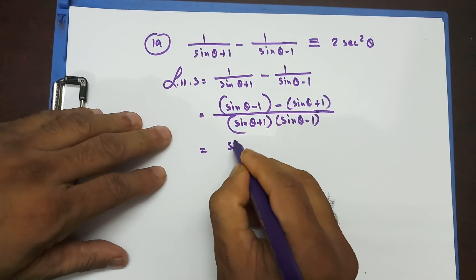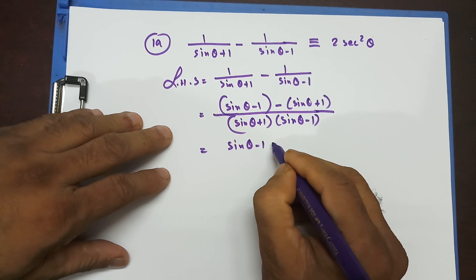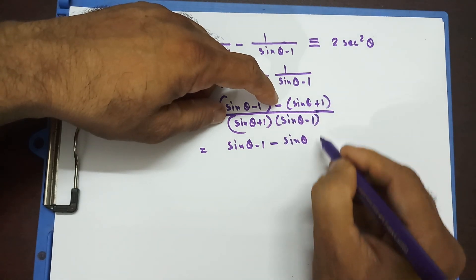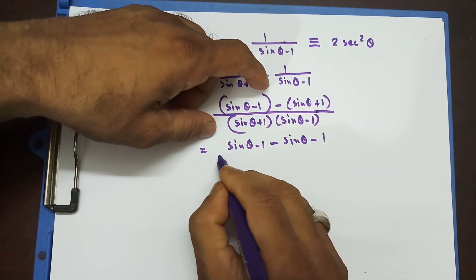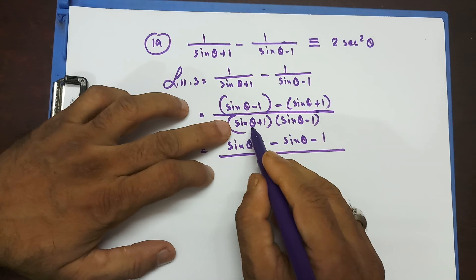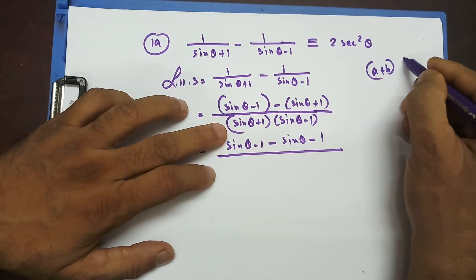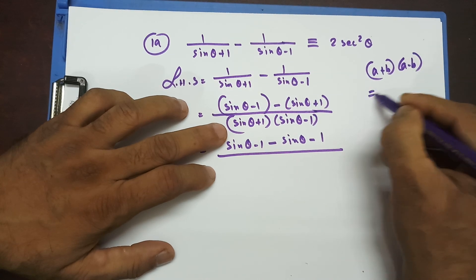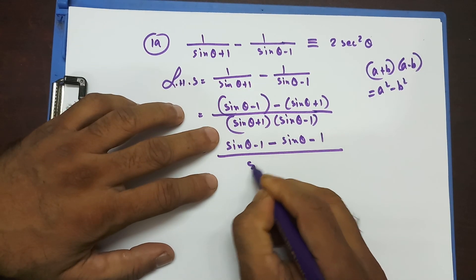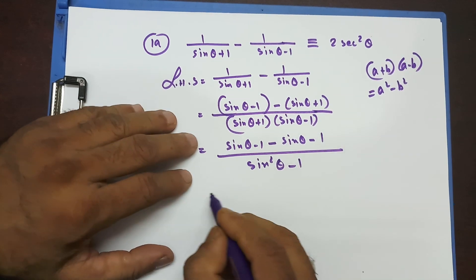When I take the bracket off from the numerator, I have minus, so that's going to be sinθ minus plus minus 1. That's A plus B times A minus B, which can be written as A² minus B². So the denominator becomes sin²θ minus 1.